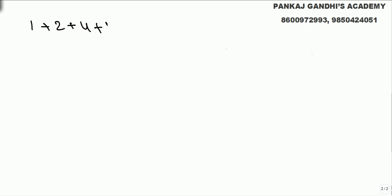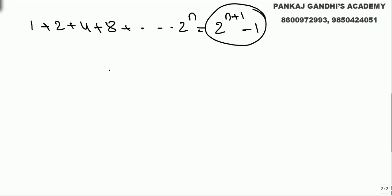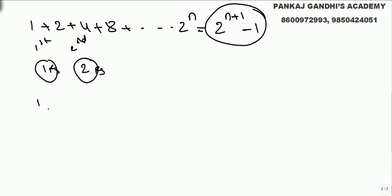Now, one concept we have seen: if we add 1 plus 2 plus 4 plus 8 up to 2^n, the summation is the next power of 2. So based on that, if I put 1 rupee in one bag and 2 rupees in another bag, what we can give is 1 rupee, 2 rupees, and 3 rupees by combining them. As we know, with 1 plus 2, we can give anything up to the next power of 2 minus 1.